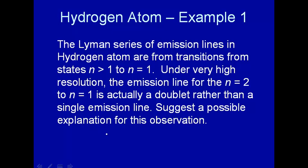Let's take a look at this example problem with the hydrogen atom. The Lyman series, you may remember those from introductory chemistry, are a series of emission lines where you have hydrogen in a state greater than n equal 1. Those states decay to the n equal 1 state, and they do that by emission of light. Under very high resolution, the emission line for n equal 2 to n equal 1 is actually a doublet rather than a single emission line. Suggest a possible explanation for this observation.